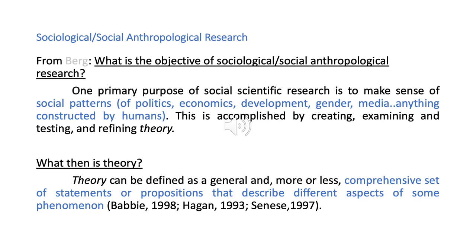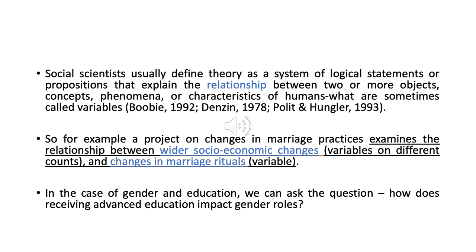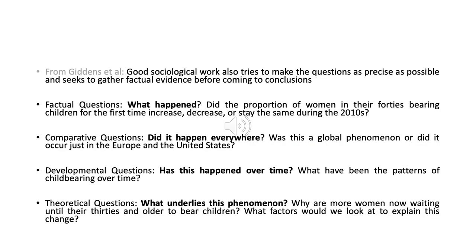Social scientists usually define theory as a system of logical statements or propositions that explains the relationship between two or more objects, concepts, phenomena or characteristics of humans — sometimes called variables. For example, one can ask: what is the relationship between wider socio-economic changes and changes in marriage rituals? Or how does receiving advanced higher education impact gender roles? We are trying to assess the relationship between one phenomena and another. Good sociological work tries to make questions as precise as possible and seeks to gather factual evidence before coming to any conclusion.